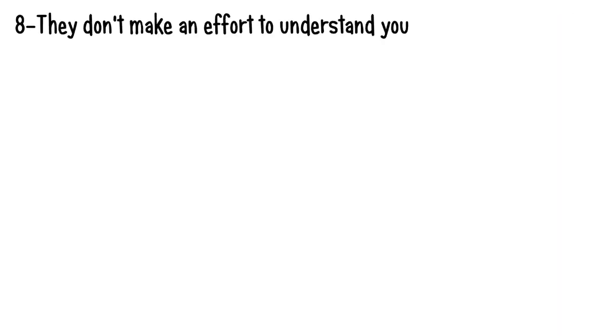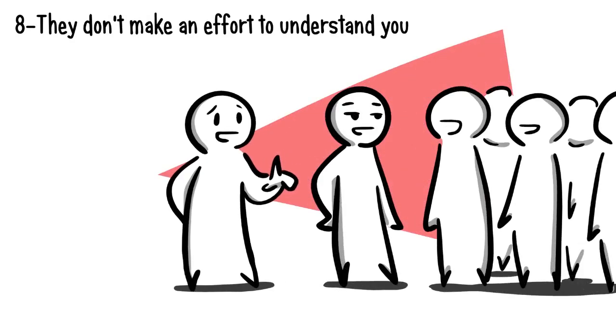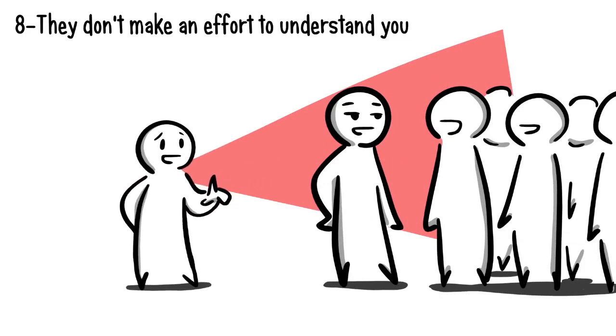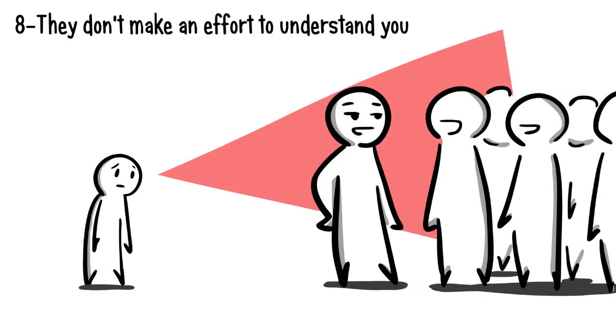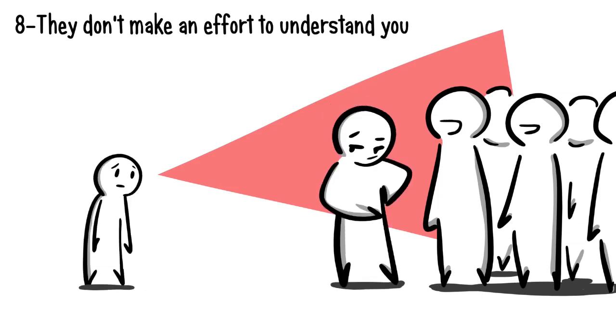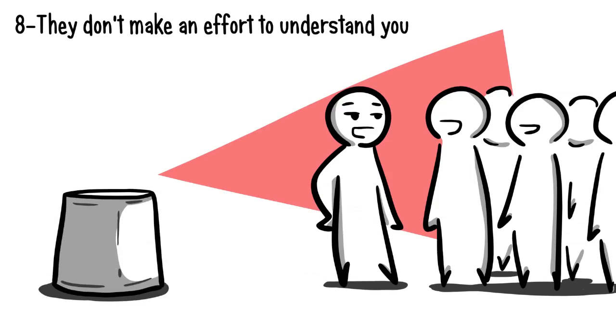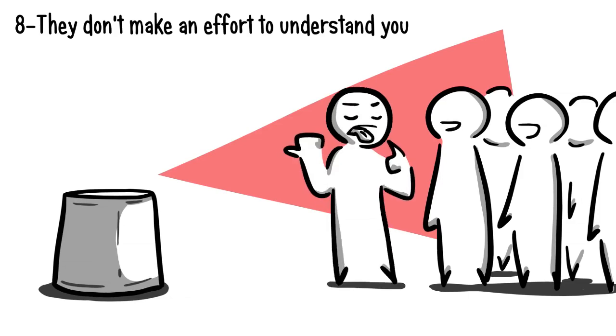Number eight: they don't make an effort to understand you. Feeling misunderstood can be a rather alienating experience, so when someone dislikes you, they won't want to provide support to your ideas and values. Instead, they'll make you feel invisible, unheard, and will dismiss your thoughts, whether it's done subtly or explicitly. One-upping is another strategy they use to control the conversation instead of allowing you to give your own inputs.